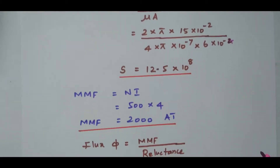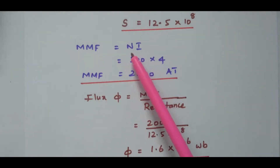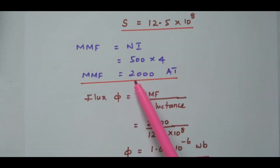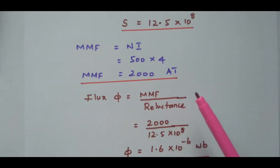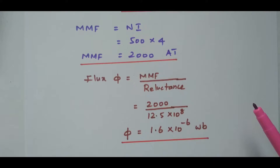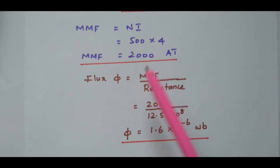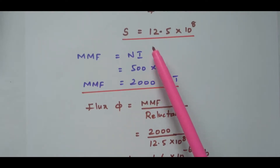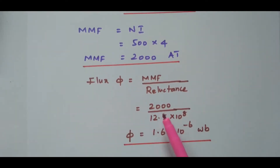Now we calculate the MMF. MMF equals N into i — number of turns into current — which is 500 times 4, giving MMF equal to 2000 ampere-turns. Then the flux: Φ equals MMF by reluctance, which is 2000 divided by 12.5×10⁸. After simplifying, flux Φ equals 1.6×10⁻⁶ Weber.